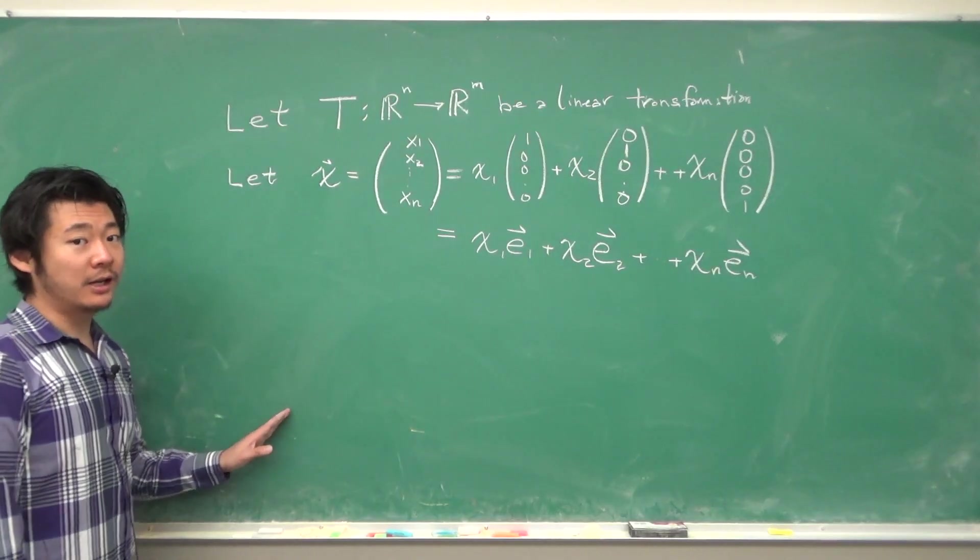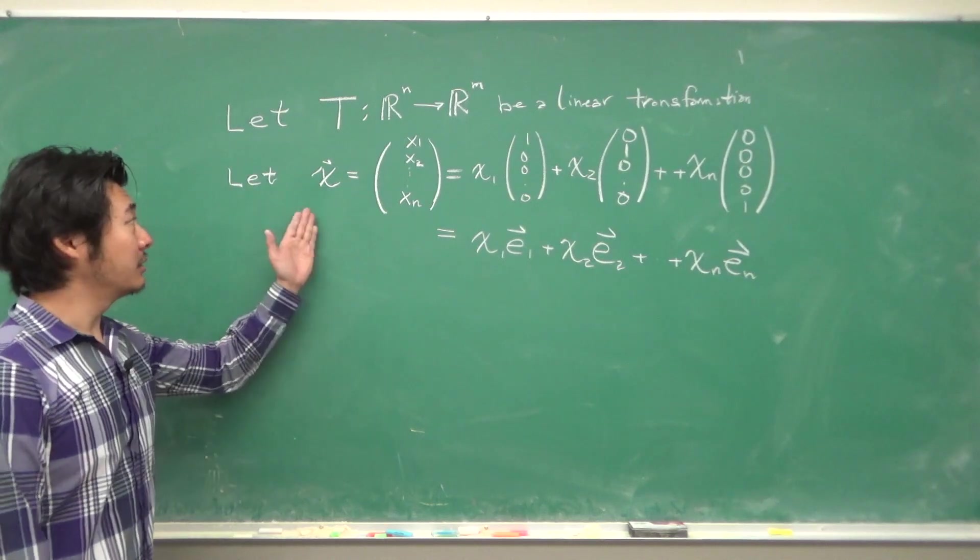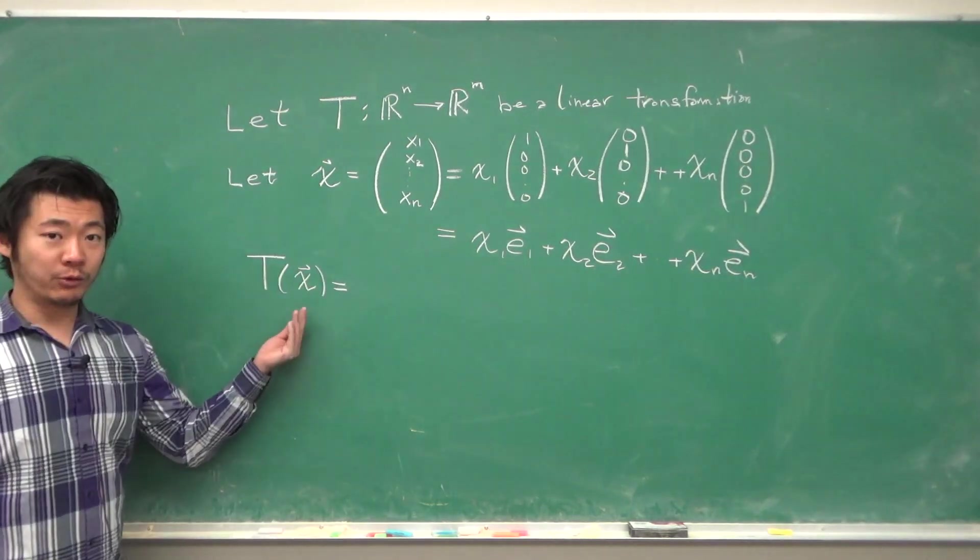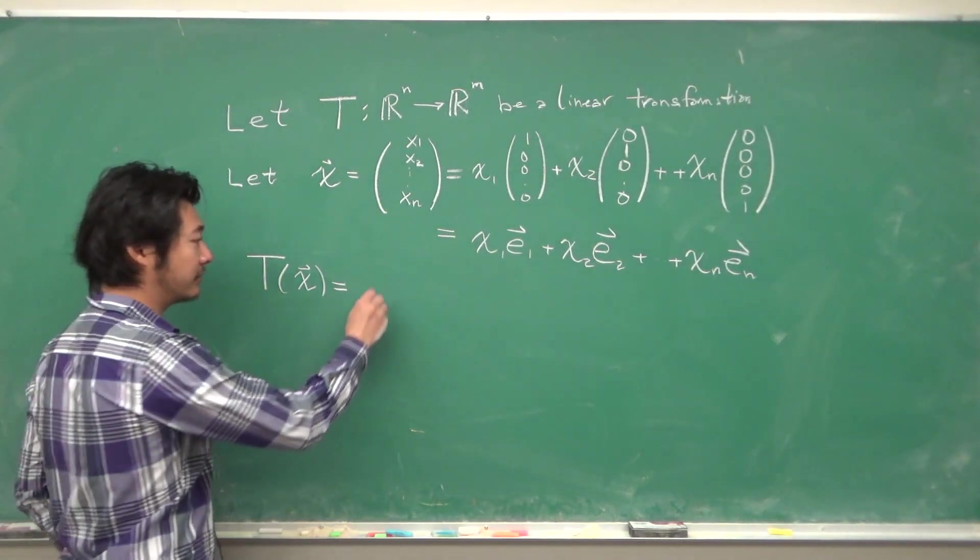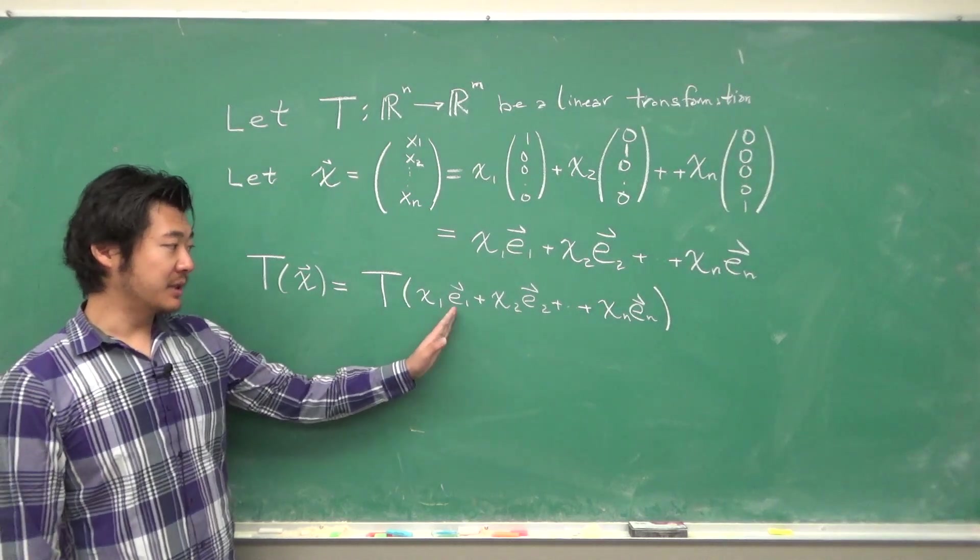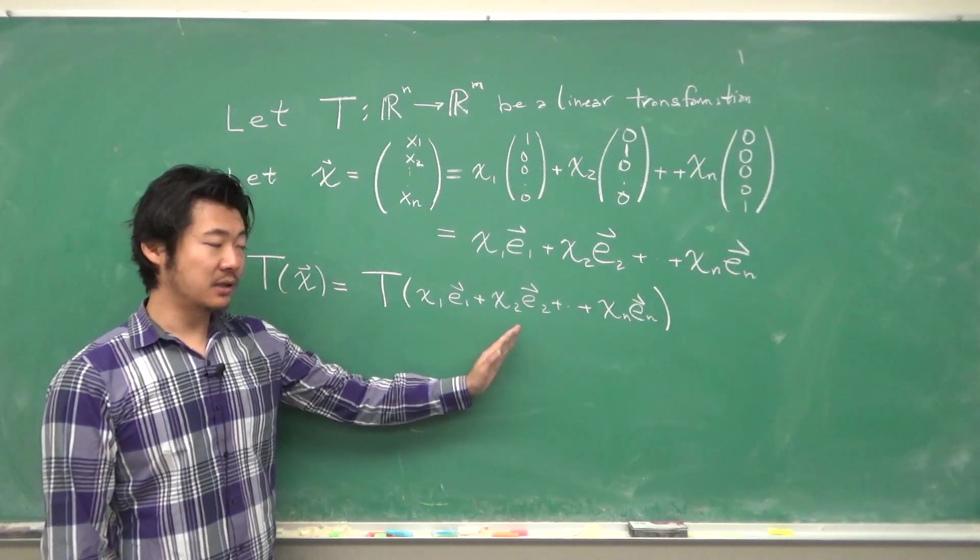Now, let's apply the linear transformation to this vector x. If we write out our x, we have T(x₁e₁ + x₂e₂ + ... + xₙeₙ).